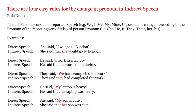Rule number one: the first person pronouns in reported speech — I, me, my, mine, we, us, our — each changes according to the pronoun of the reporting verb subject. If the reporting verb subject is third person — he, she, it, they, her — then we use those pronouns accordingly. Example: Direct speech — 'He said, I will go to London.' She said the same thing, so indirect speech: 'She said that she would go to London.' 'Will' becomes 'would.'